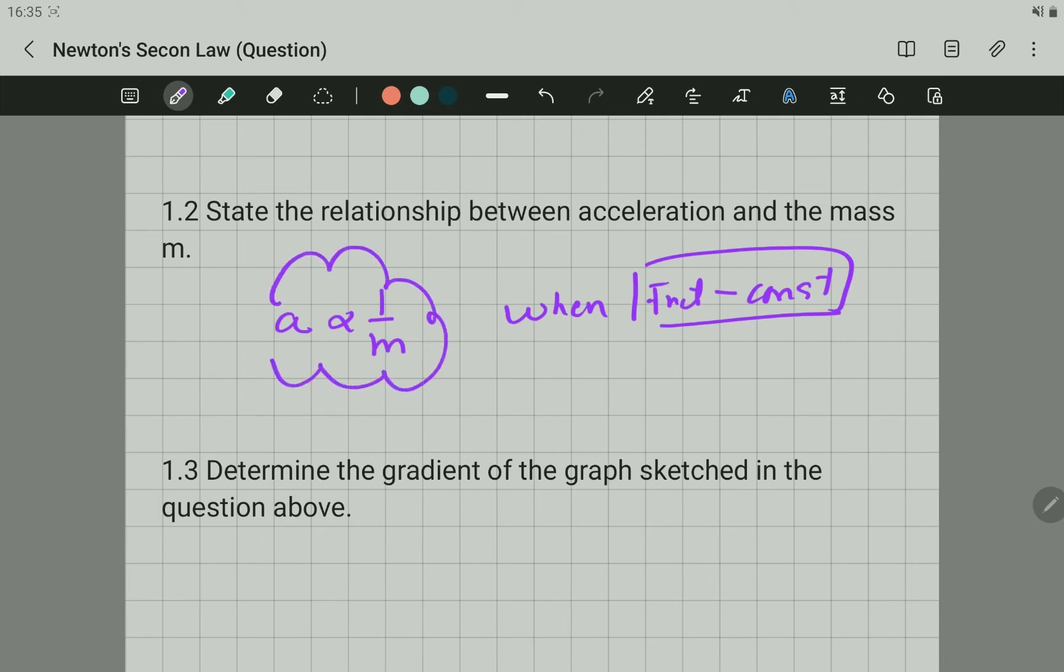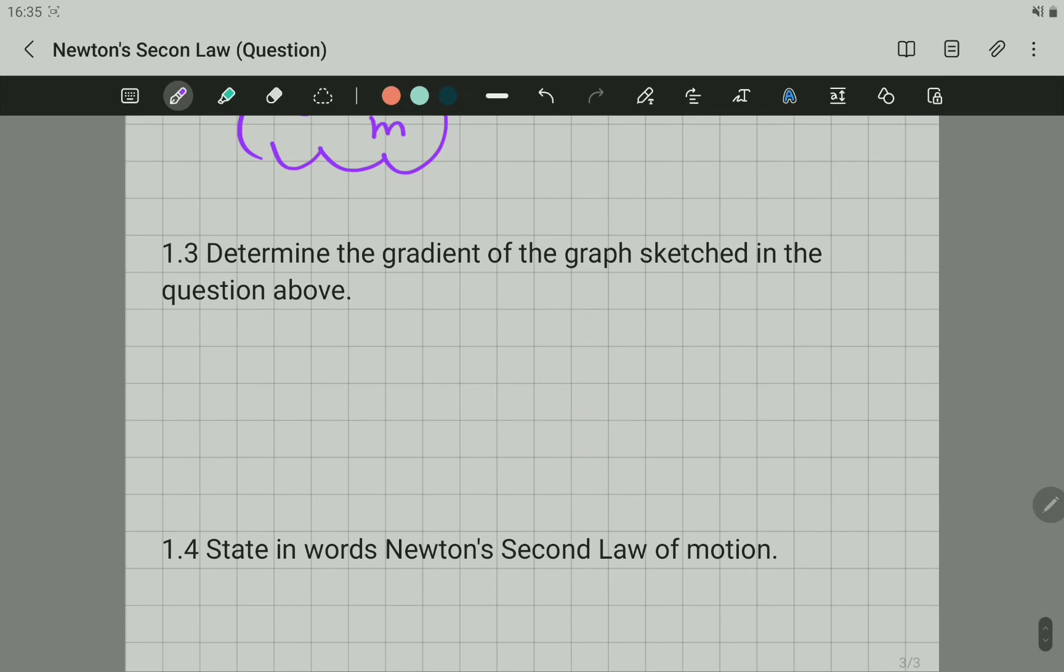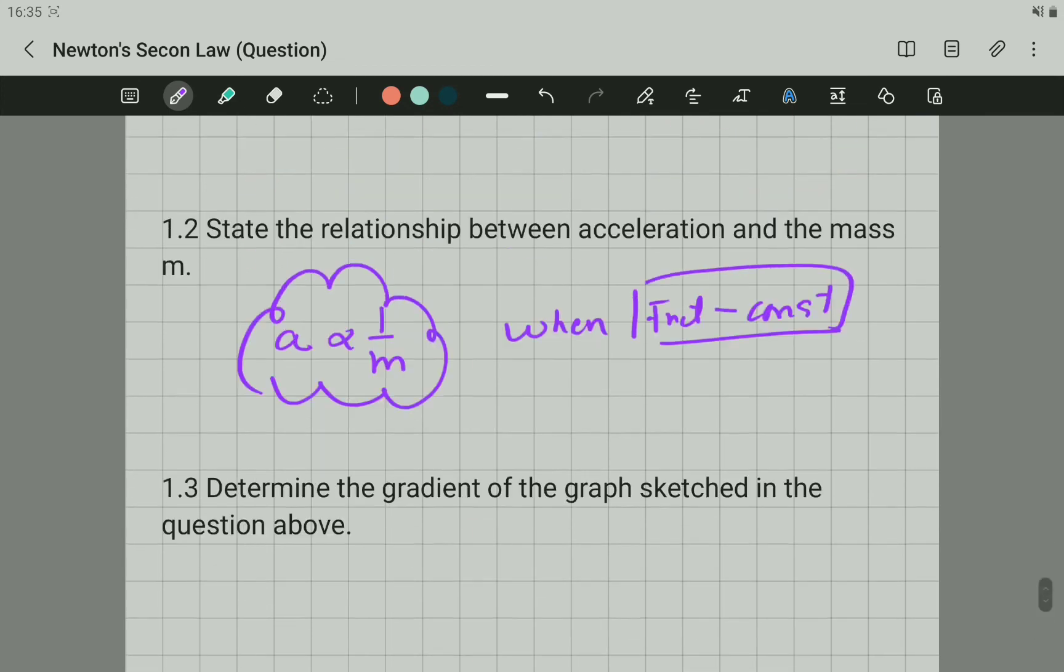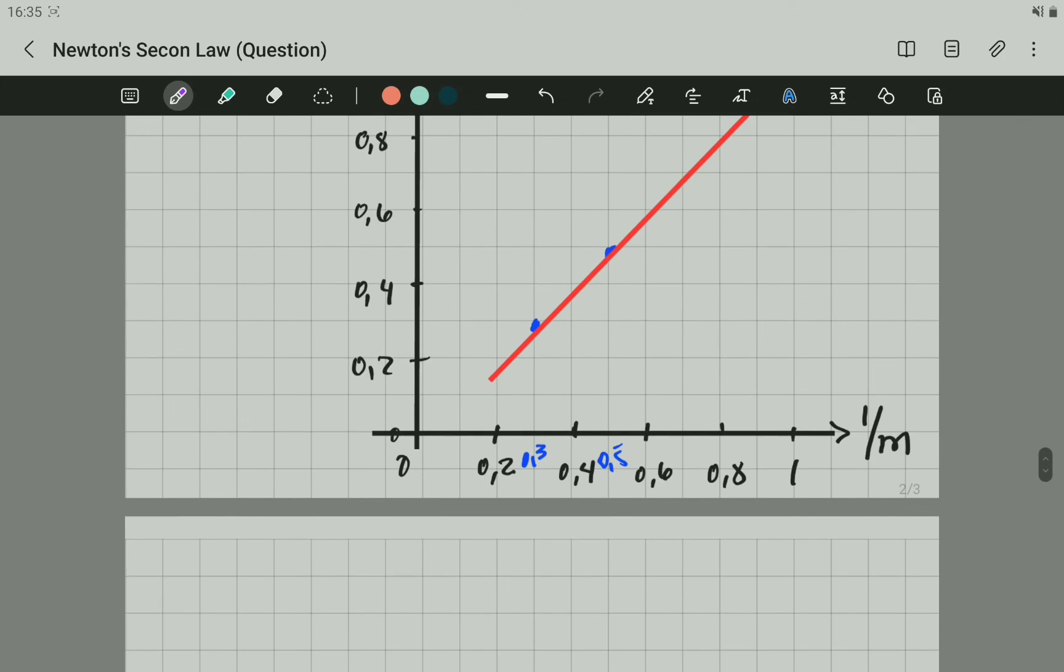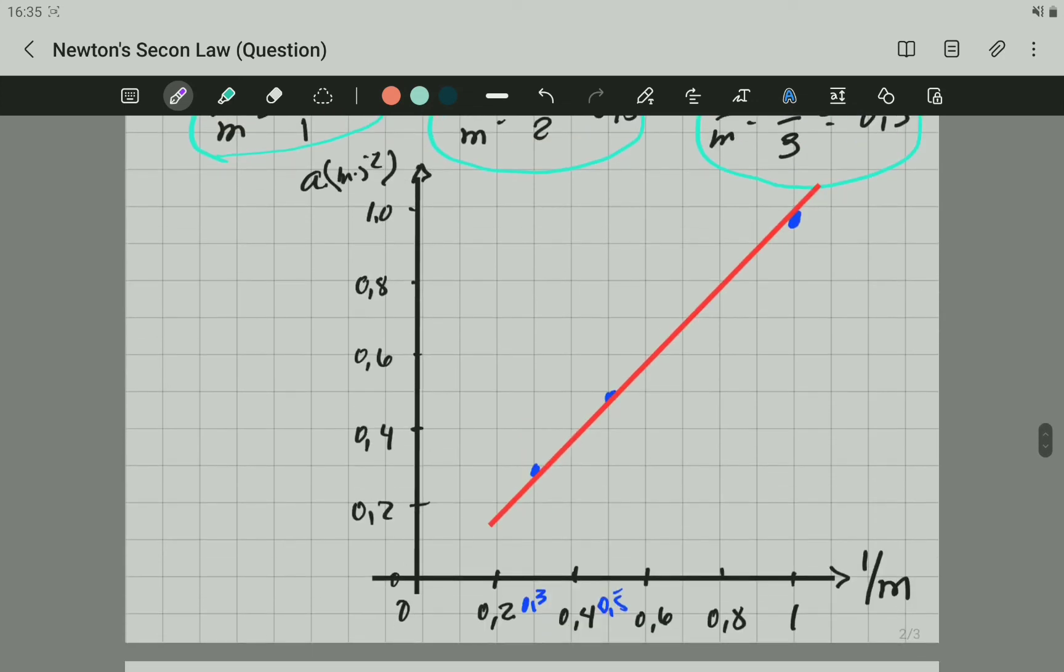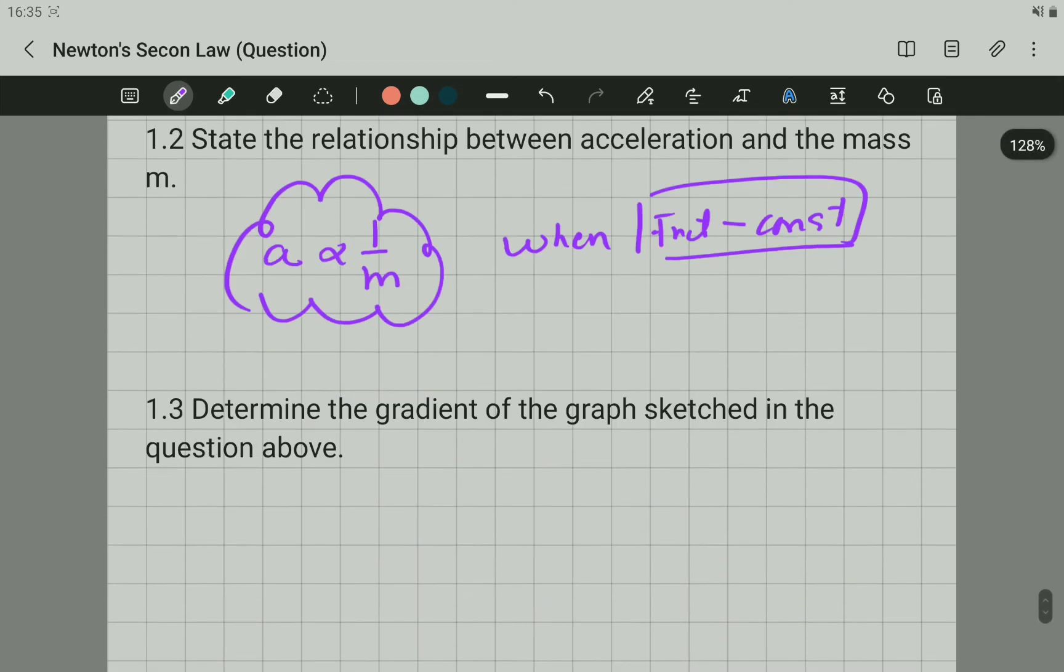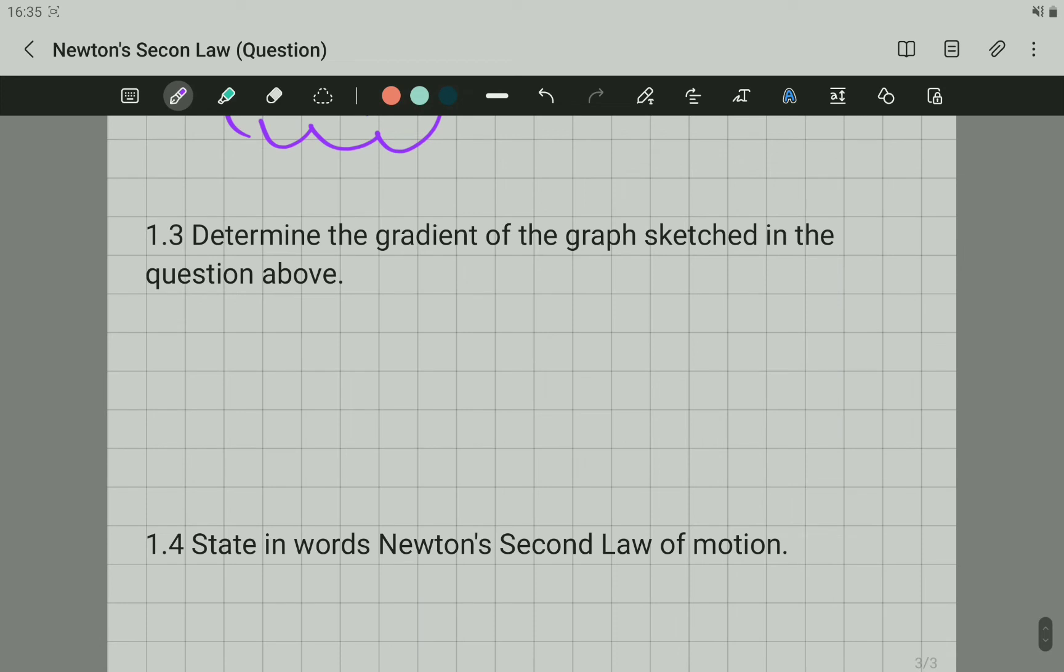Question 1.3: Determine the gradient of the graph sketched in the question above. Now, for the gradient of the graph, you should come and use the line, not the points, but the line. However, we can use the points in this case, which is not very difficult.